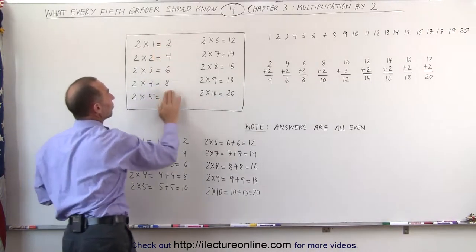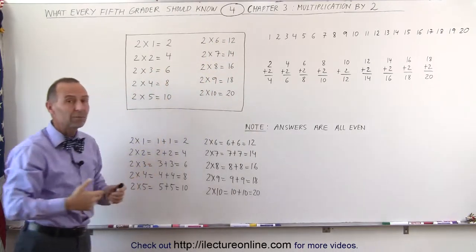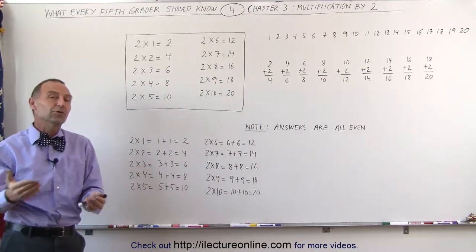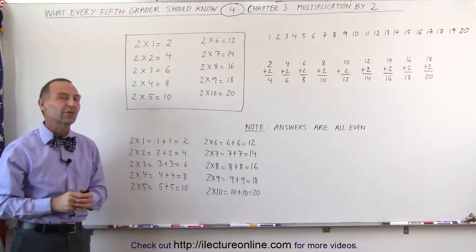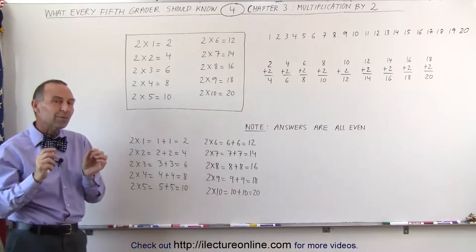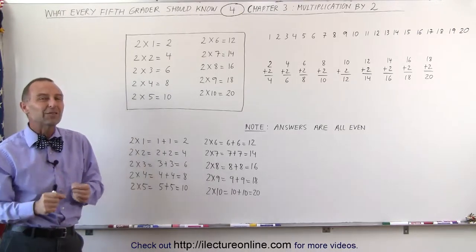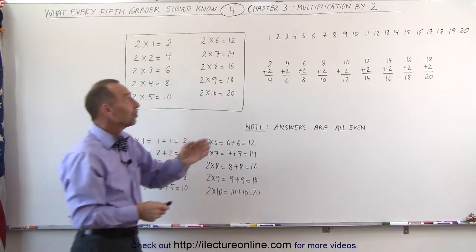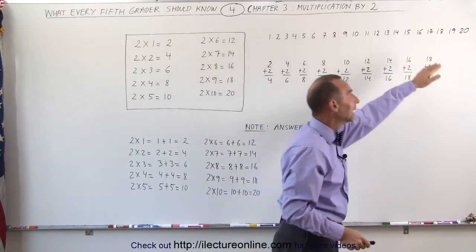If these were erased, we should simply be able to go 2 times 1 is 2, 2 times 2 is 4, 2 times 3 is 6, and so forth. It helps sometimes to recognize what that really means and what it stands for. For example, here we have the numbers from 1 to 20.